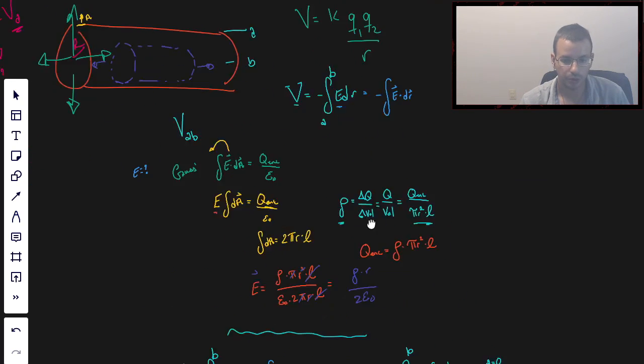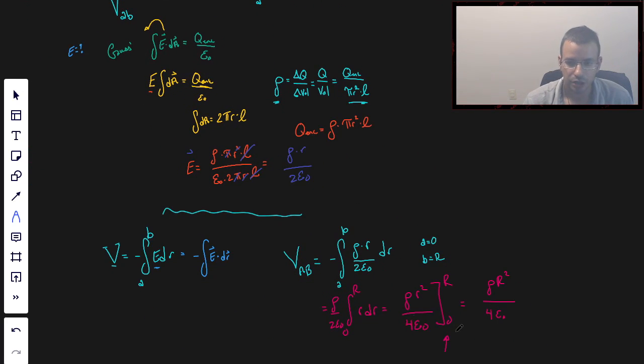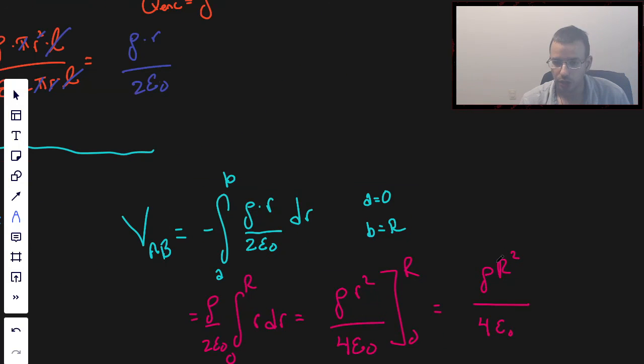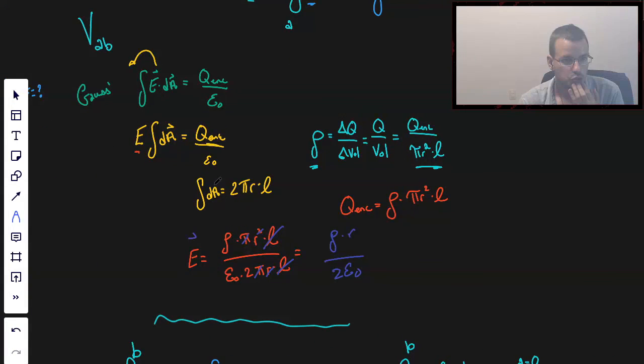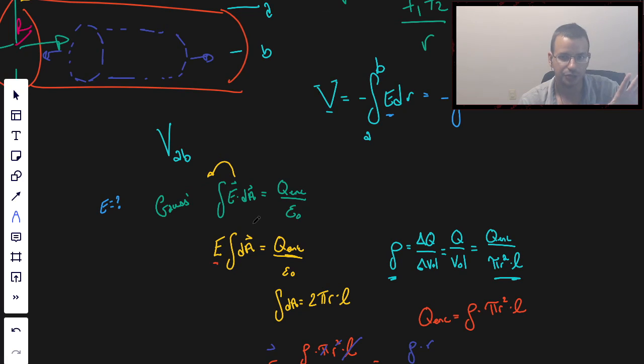So the formula, the answer we get down here at the bottom, rho r squared over 4 epsilon naught, where r is the radius of the cylinder, solid cylinder. And that gives you the voltage at the center of an infinite cylinder of charge. So a bit confusing, and this one is really hard to get an idea of what's going on. To kind of recap where we went here,